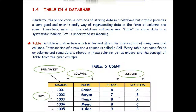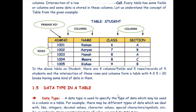Every table has some fields or columns, and related data is stored in these columns. For example, we have a table called 'Student' with four columns: admission number, name, class, and section. We have five records, one for each student. Each record represents one complete detail of one student — for example, admission number 1001 belongs to student Raman studying in Class 6 Section A.